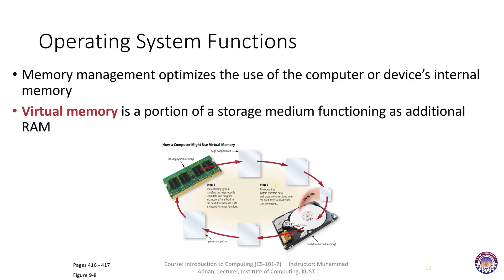In step two, the operating system transfers data and program instructions from the hard drive back to RAM when they are needed — this is called swapping in. The least recently used data pages are swapped out of RAM to make space for other important processes or applications. That space on the hard disk acts as virtual memory for the CPU — the CPU treats it as if it were part of RAM, even though it is actually part of the hard drive.